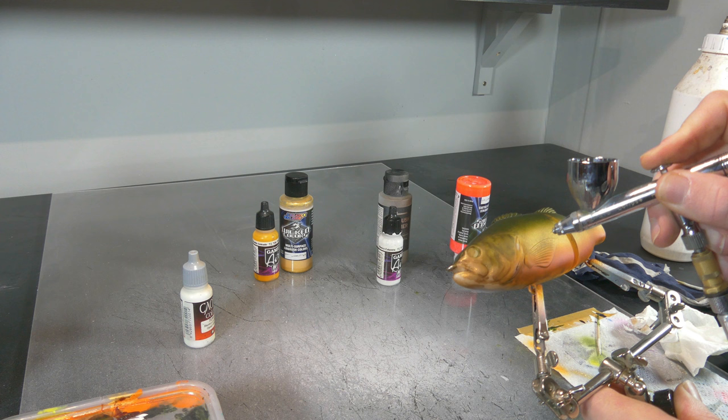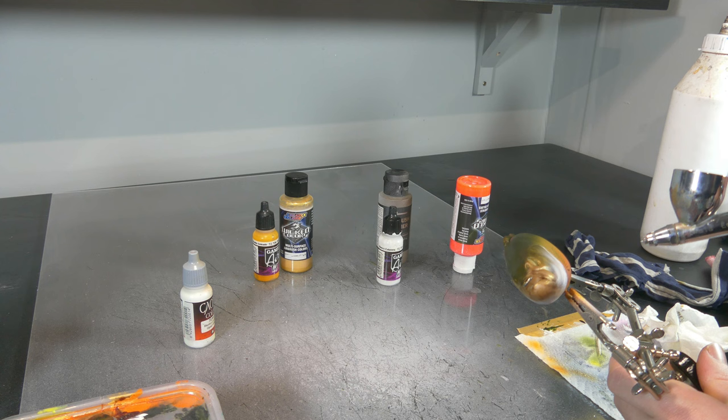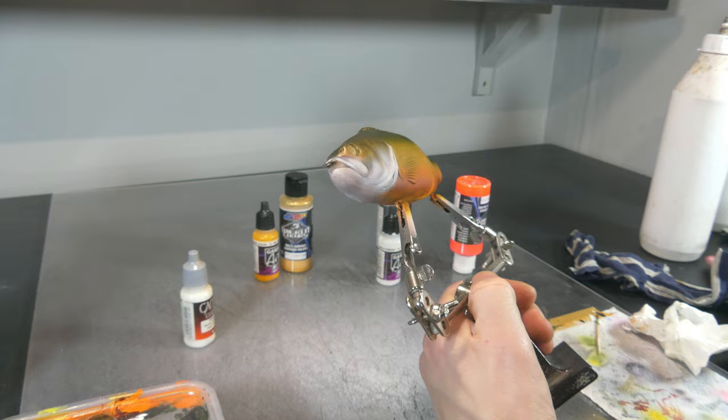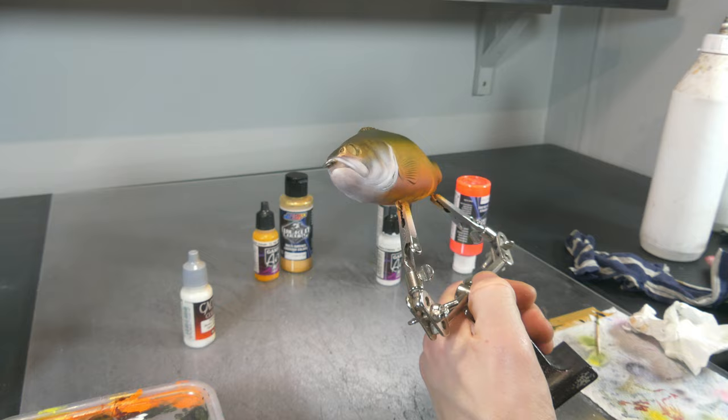For the gill plates I am going to use a little bit of game air dead white, and I'm going to reduce this quite a lot so it becomes a little bit more transparent so that I can carefully spray this onto the gill plates and create a nice transition from lighter to dark.